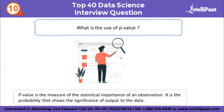What is the use of p-value? P-value is the measure of the statistical importance of an observation. It is the probability that shows the significance of output to the data. We compute the p-value to know the test statistics of a model. It helps us choose whether to accept or reject the null hypothesis. If the p-value is less than 0.05, reject the null hypothesis; otherwise accept it.